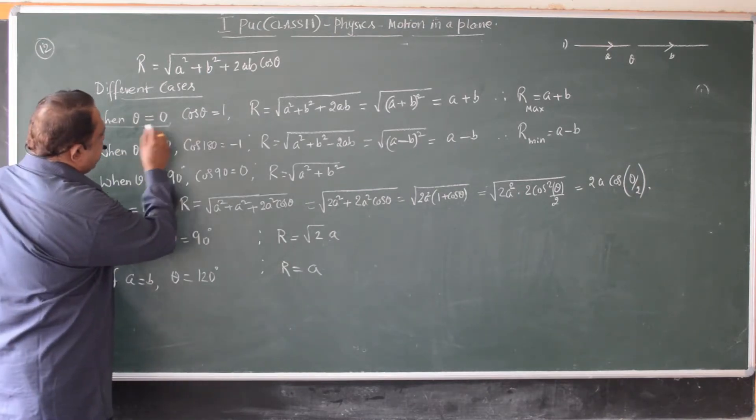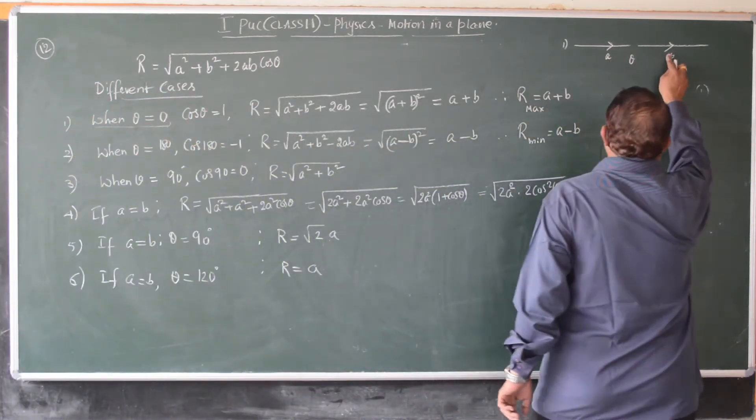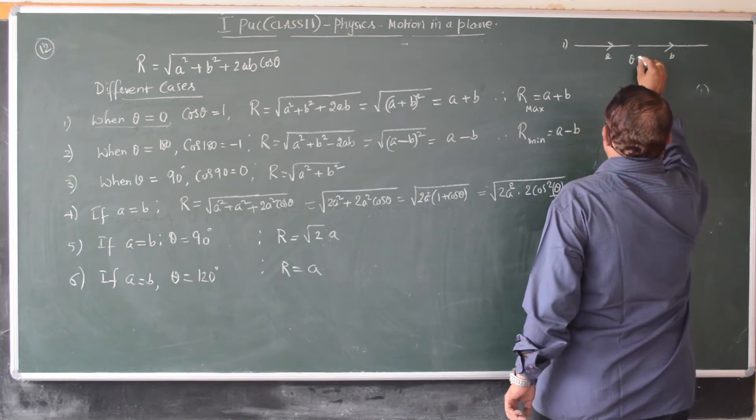Case number one, when theta is zero, that means there is no angle between the two vectors. They are in the same straight line. Theta is zero.